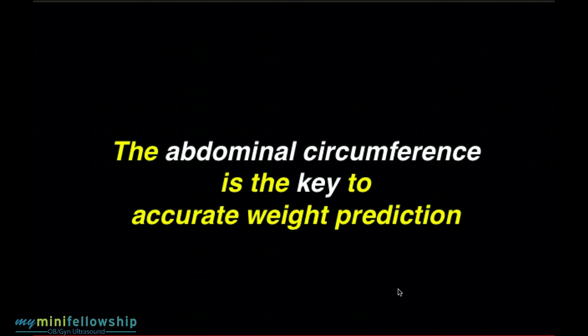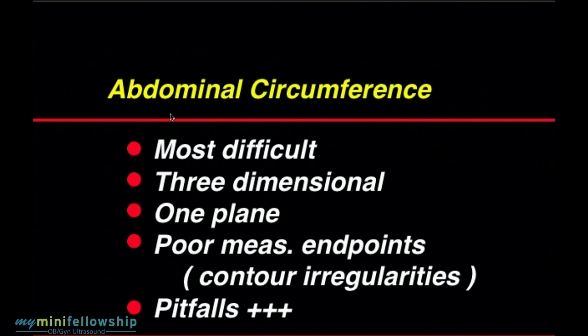The abdominal circumference is our final measurement, and it is the key to accurate weight prediction. Once we pass 24 weeks, hopefully we are not trying to judge the age of the fetus, because if we are, we're in trouble. Unfortunately, the abdominal circumference turns out to be our most difficult measurement. Again, it has to be correct in three dimensions. We have to get the right level of the abdomen. We cannot incline the plane of section, and we cannot angle the plane of section to the perpendicular midline, so all three of those must be correct, which again means we have essentially a single plane of section that is absolutely perfect for measuring the abdominal circumference.